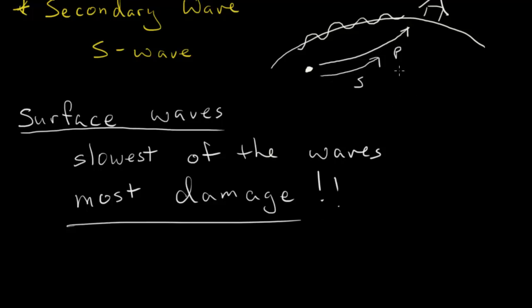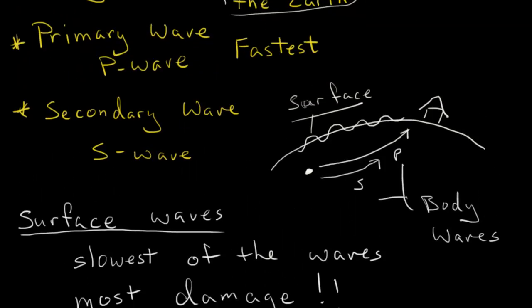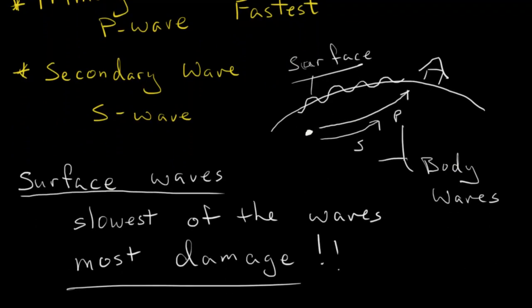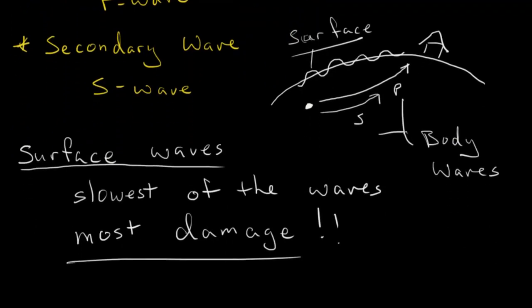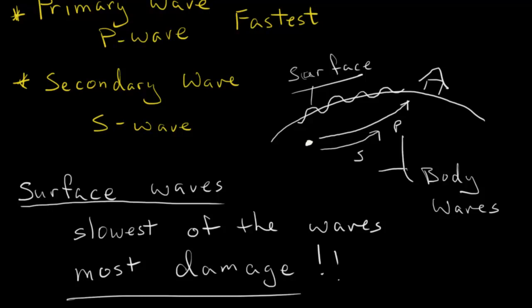To summarize: we have P waves and S waves, which are both body waves — P waves being the fastest, S waves being slower. And then we have surface waves, which are the slowest and cause the most damage. In the book there's some good information, and there are also links to animations that help explain how these waves move. Thanks for watching.